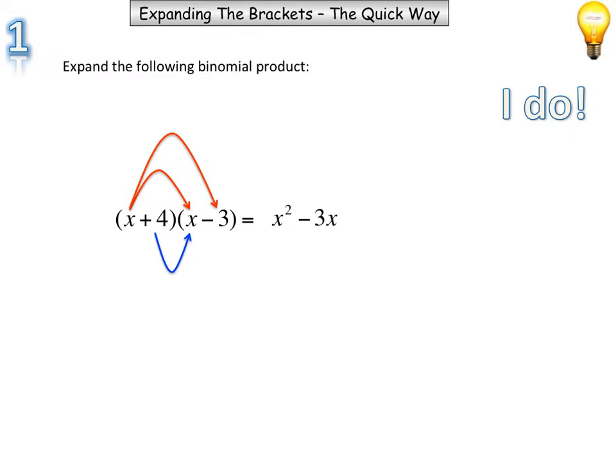Then we multiply the second term in the first brackets by the first term in the second brackets. And then the second term in the first brackets by the second term in the second brackets, which will give us 4x and 4 times negative 3 is negative 12.